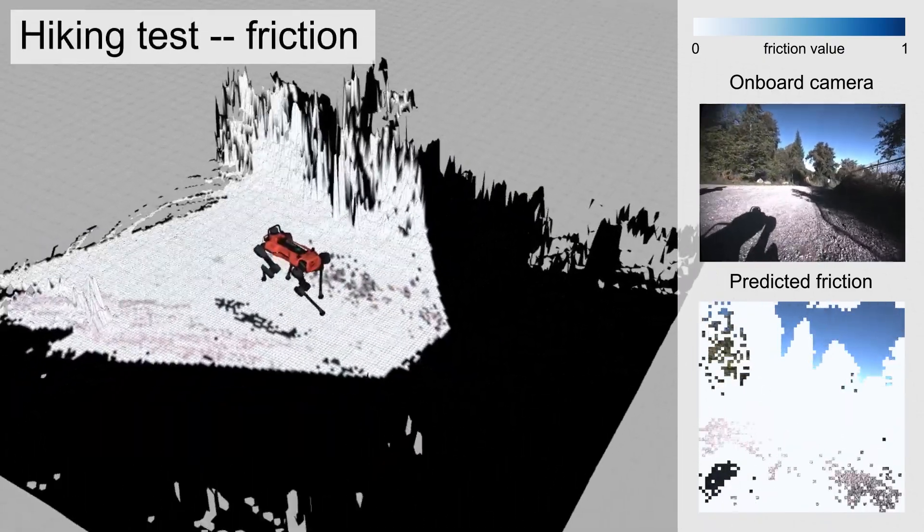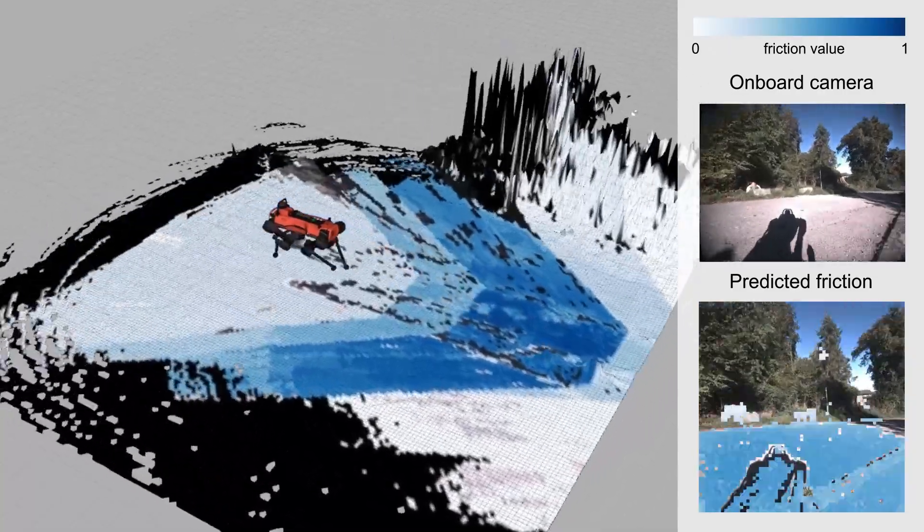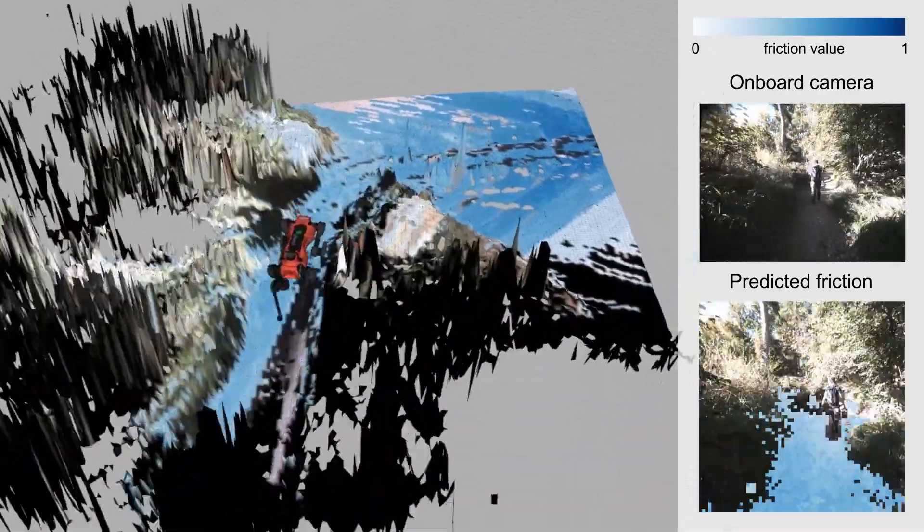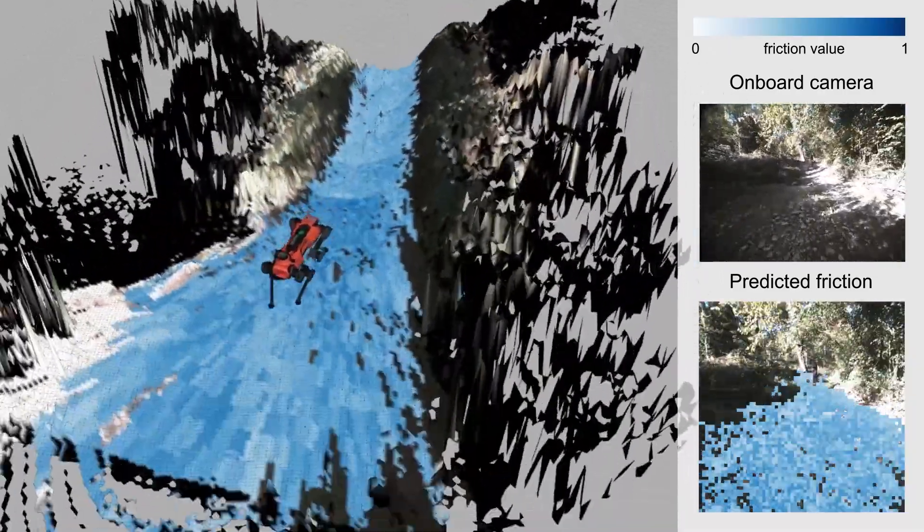We also evaluate the vision pipeline in two wild scenarios. The first one is the hiking test. Here we project the predicted friction image into the elevation map.